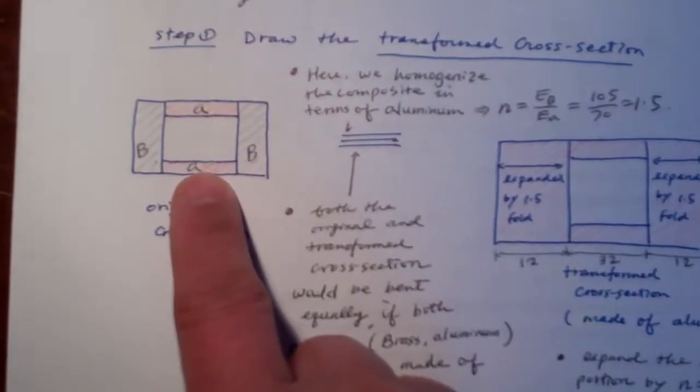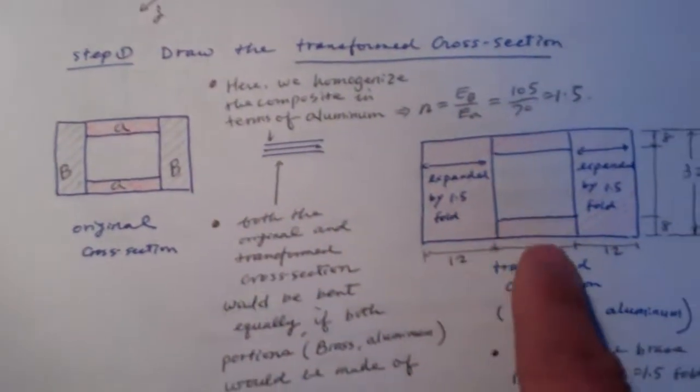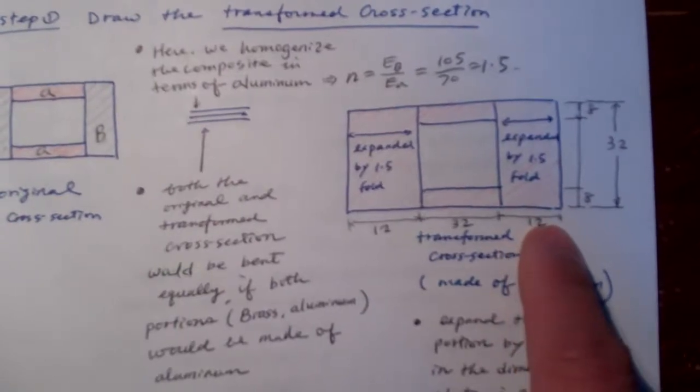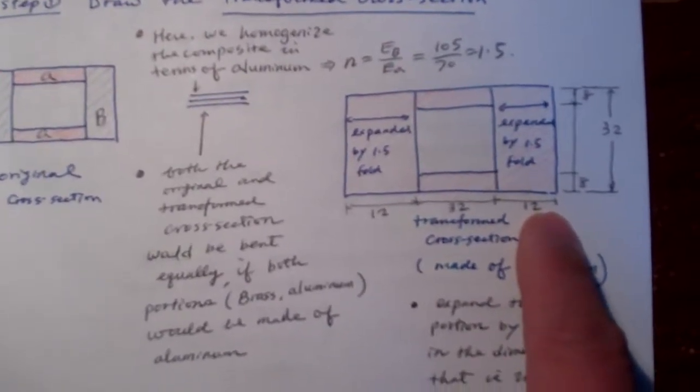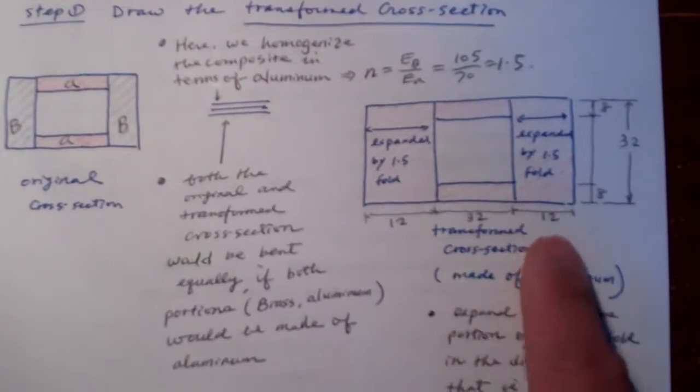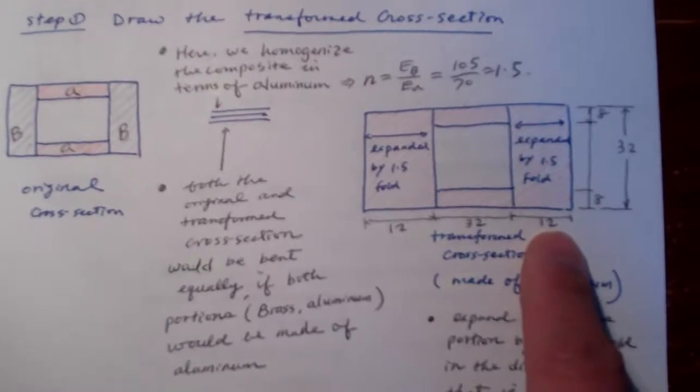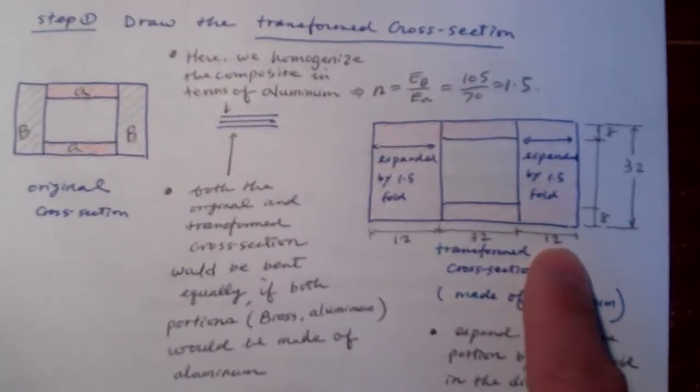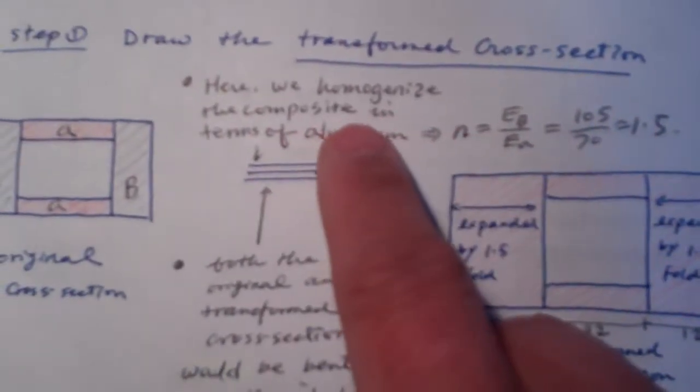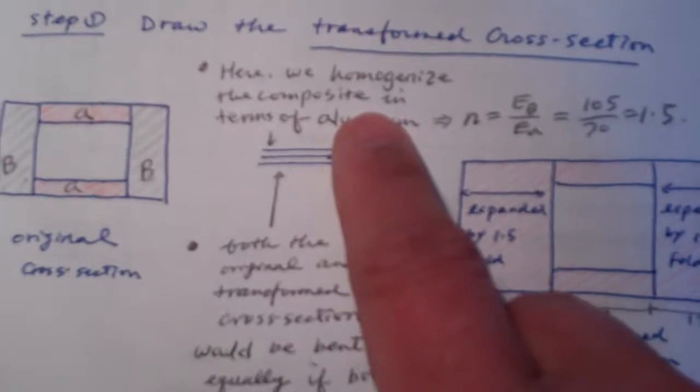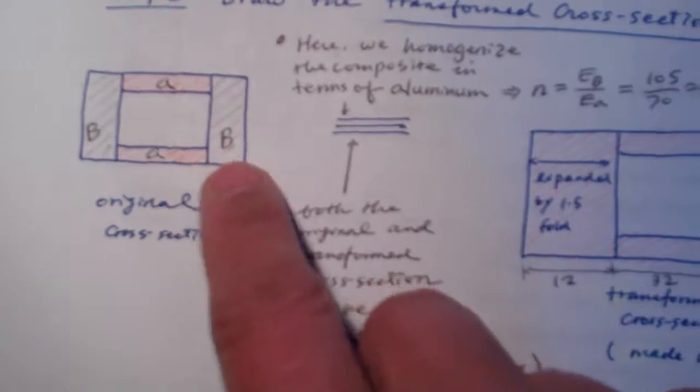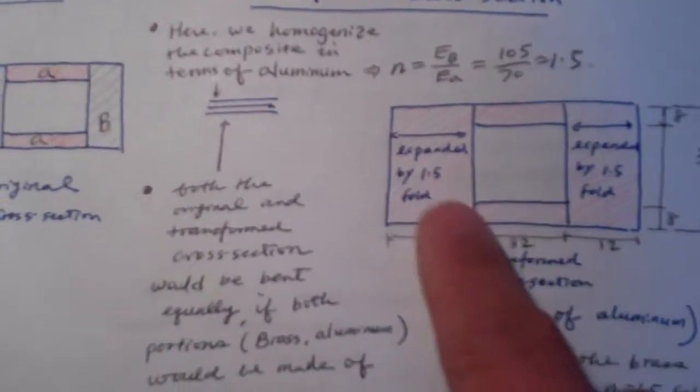And to get the transformed cross-section, we have to expand or widen the dimensions of one material, such that the transformed cross-section is homogenized with the other material. And for this example, I choose aluminum as the reference material, which means I'm going to homogenize the original composite material in terms of aluminum.